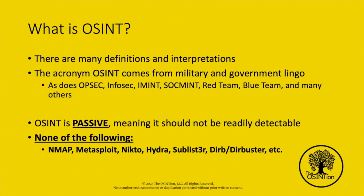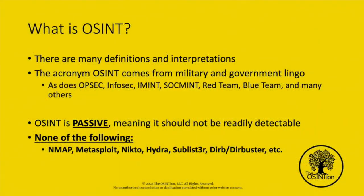We have to factor in that OSINT is passive — it should not be readily detectable. If you're using noisy tools like Nmap, Metasploit, Nikto, or Hydra, that affords defenders the opportunity to detect you. When we are doing OSINT, if we want to follow the team color wheel popular within industry, we would be part of the transparent team, because if we're doing proper OSINT, we would not be detectable. We're not the red team, not the blue team — we basically are on our own team. We should be the team that no one can detect.